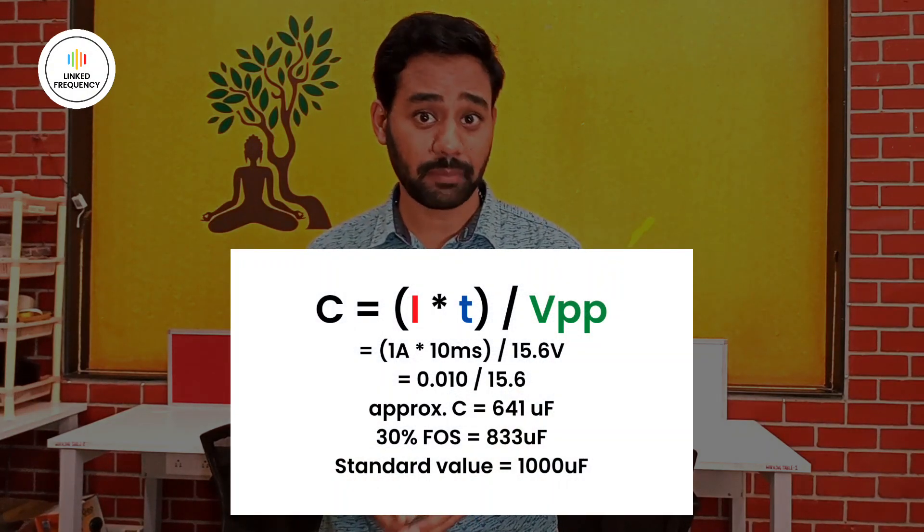Consider a 12-0-12 transformer at the input side, converting 220V AC into 12-0-12 AC at the output. Using both 12V terminals gives a 24V peak-to-peak voltage. A bridge rectifier consumes 1.4V per half cycle because two diodes conduct simultaneously, leaving us with 22.6V. A 7805 regulator requires a minimum input of 7V to produce 5V, so the input to the regulator ranges between 7V and 22.6V. The difference between these two voltages is Vpp, which comes to 15.6V.